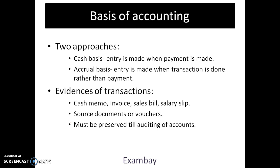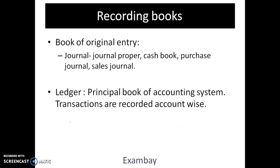Then we have evidence of transactions — cash memo, invoice, sales bills. These are all the evidence required to support a transaction and must be preserved until auditing of accounts, so auditors can verify the veracity of the transaction. Then we have books of original entry, which are the journal. The book in which a transaction is recorded for the first time is called the journal. Types include journal proper, cash book, and other day books. A question may come asking which of the following is a book of original entry.